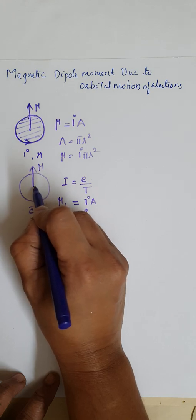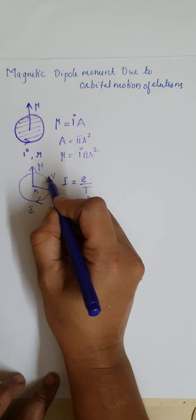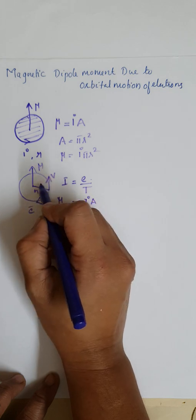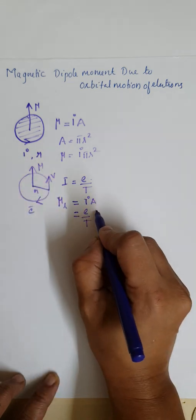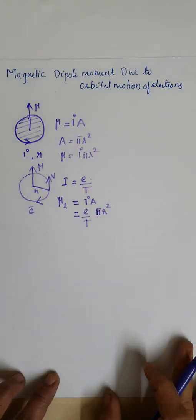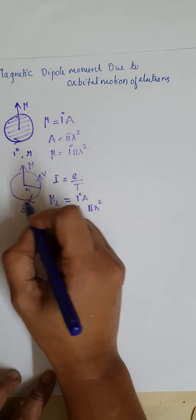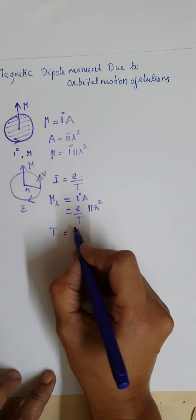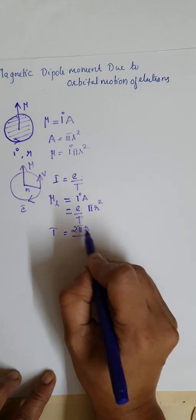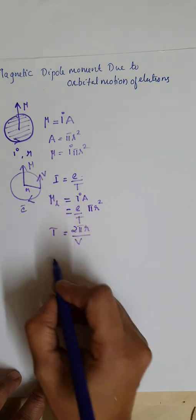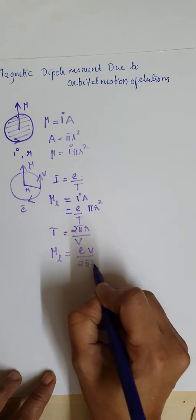If R is the radius of this orbit and the electron moves with a velocity V, we can represent the area of this circular orbit as pi R squared. The time period T can be represented as the total distance covered by the electron for one complete revolution, which is 2 pi R, divided by the velocity V. So we can represent mu L as E into V divided by 2 pi R, into pi R squared.